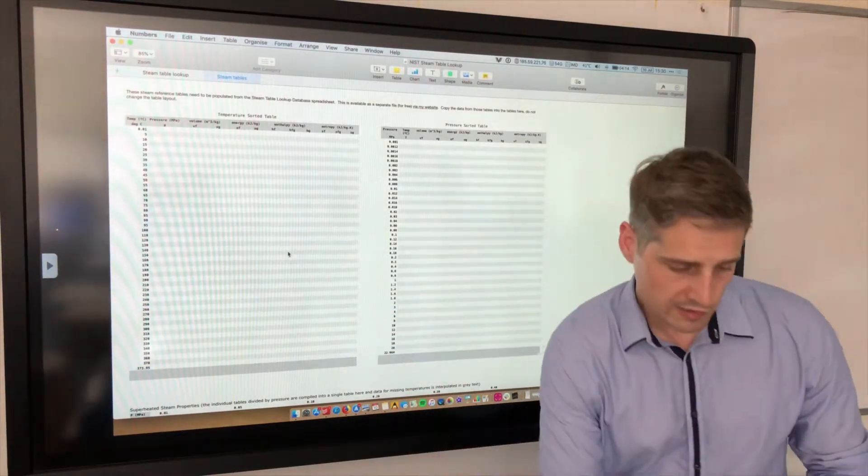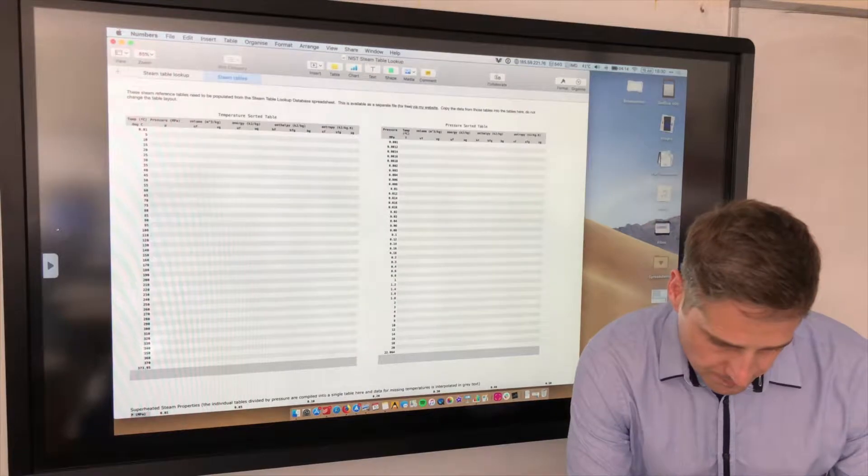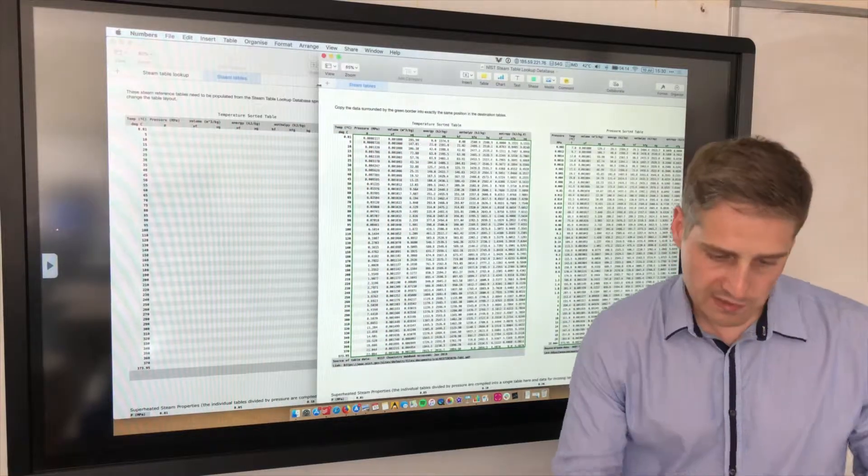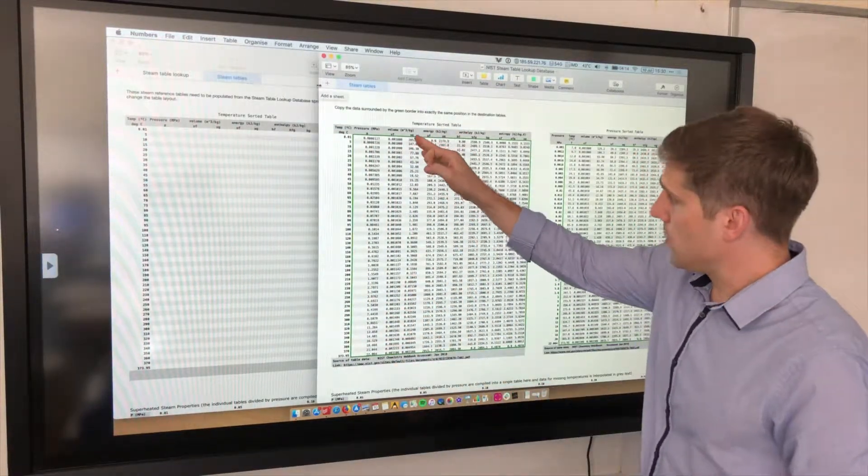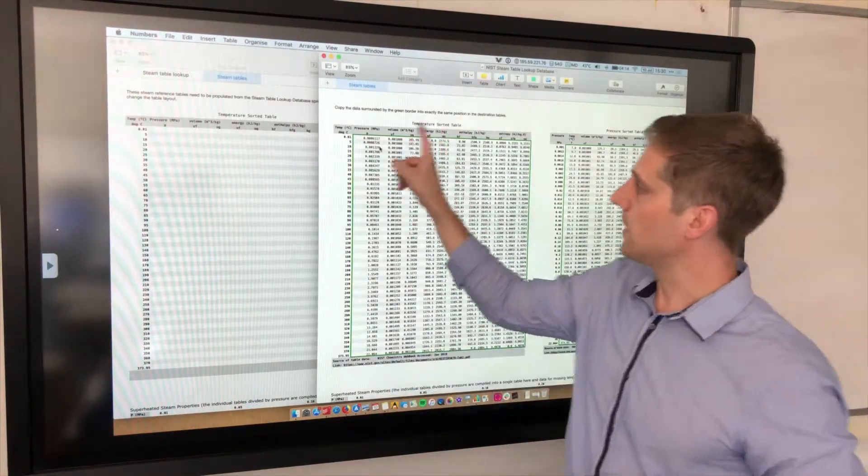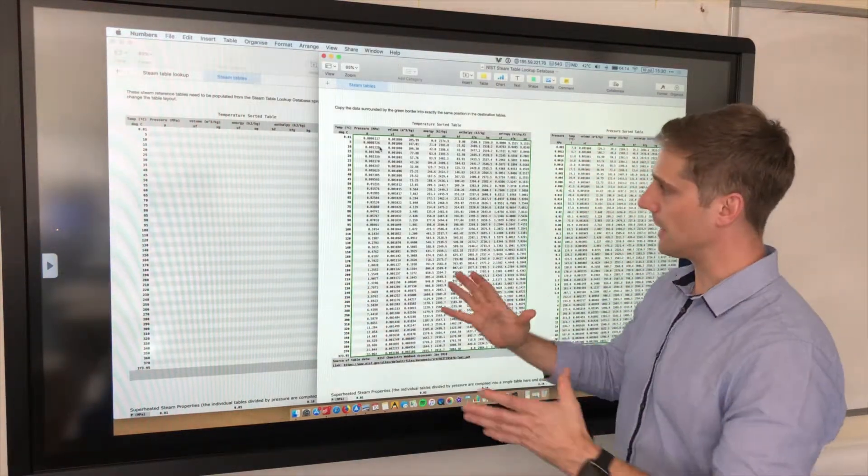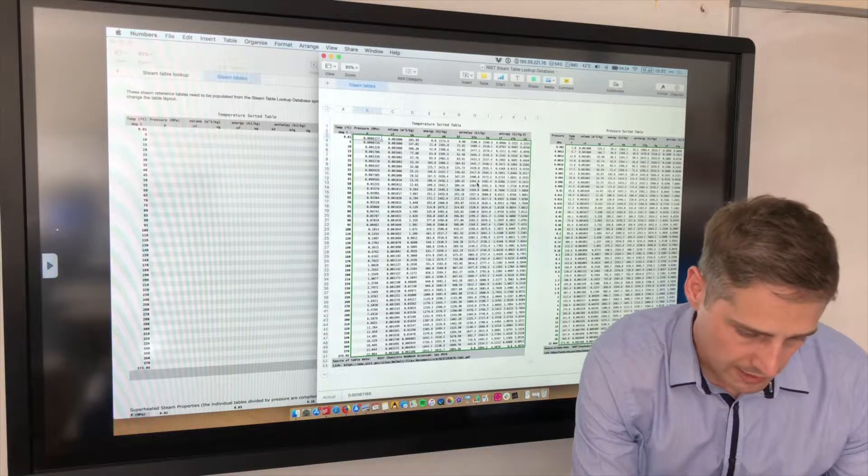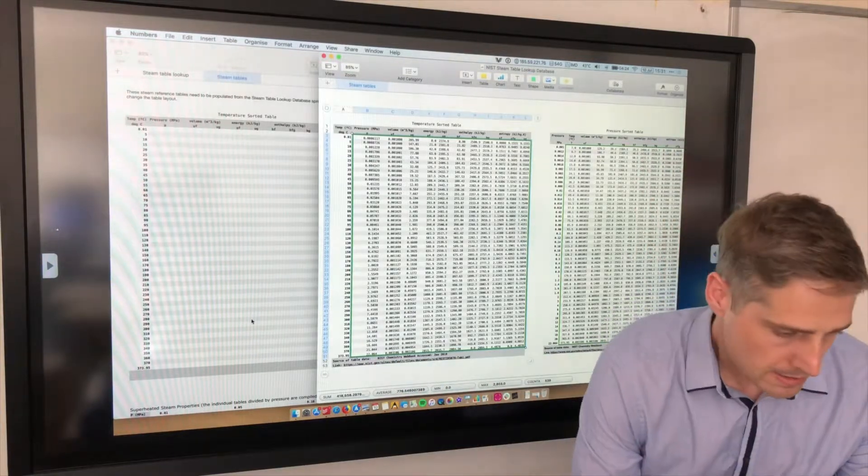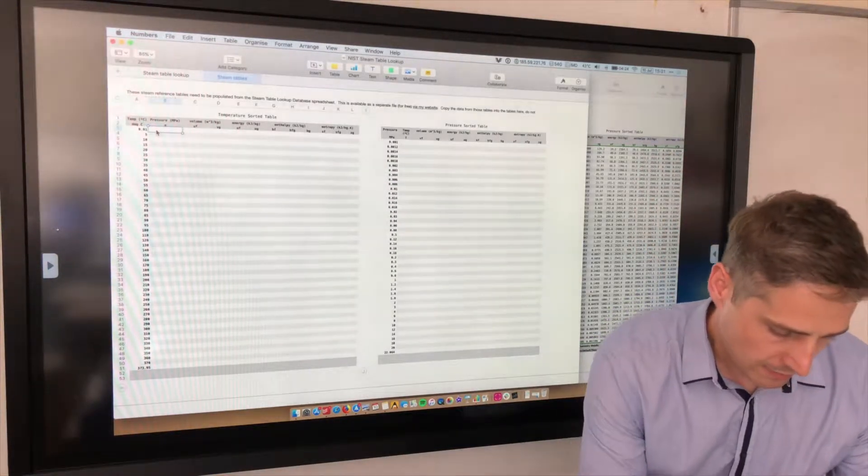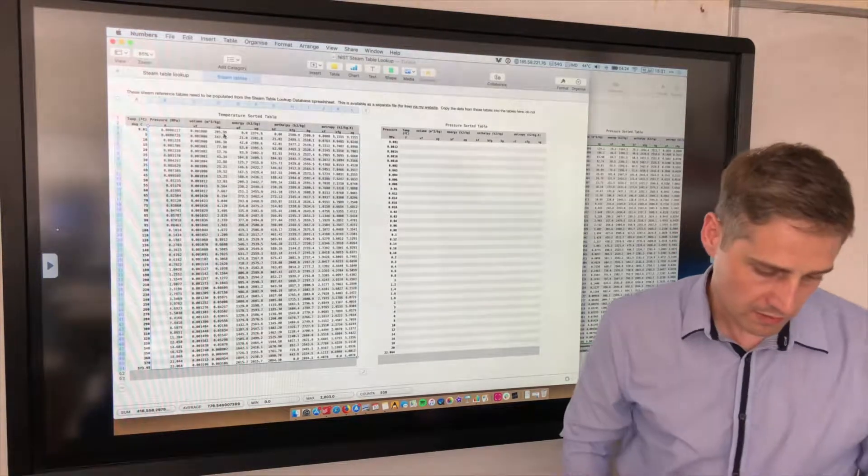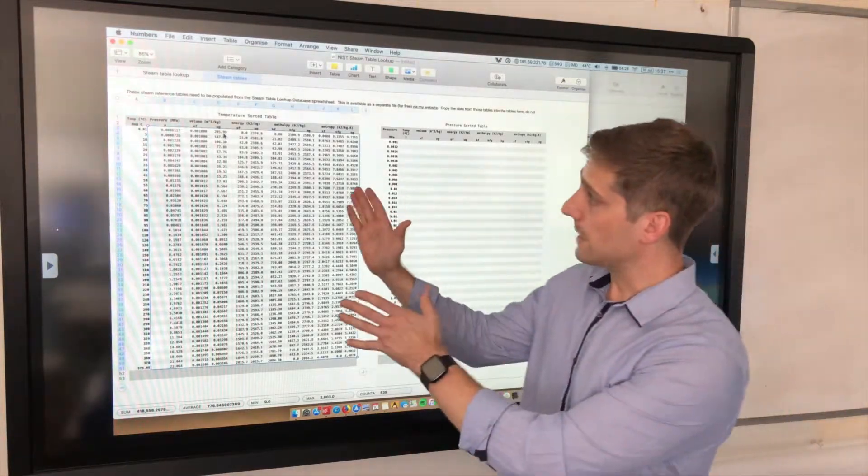What we need to do is copy across the data. This is the second file, the free file which gives you the table data. You can see the layout is very similar. We've got the temperature sorted table, and I've outlined in green what you need to copy across. You can see the layout of the header and the temperatures is exactly the same. We're going to select the cells here from top left to bottom right, copy that across. I'm using edit, paste and match style just because I like it to look nice and neat. That's that table sorted.